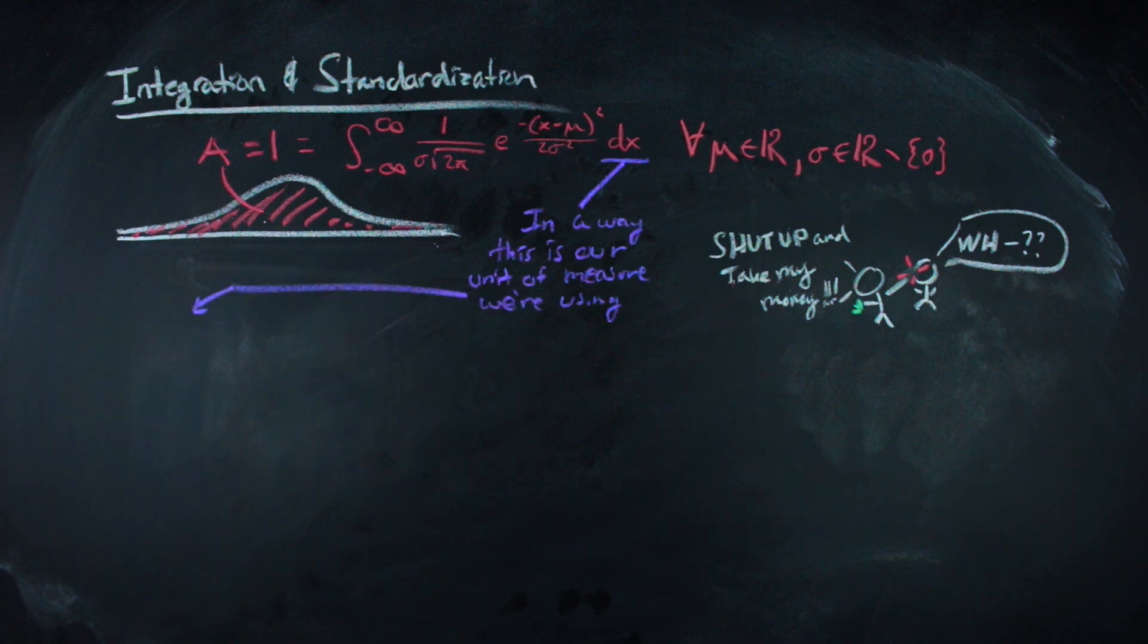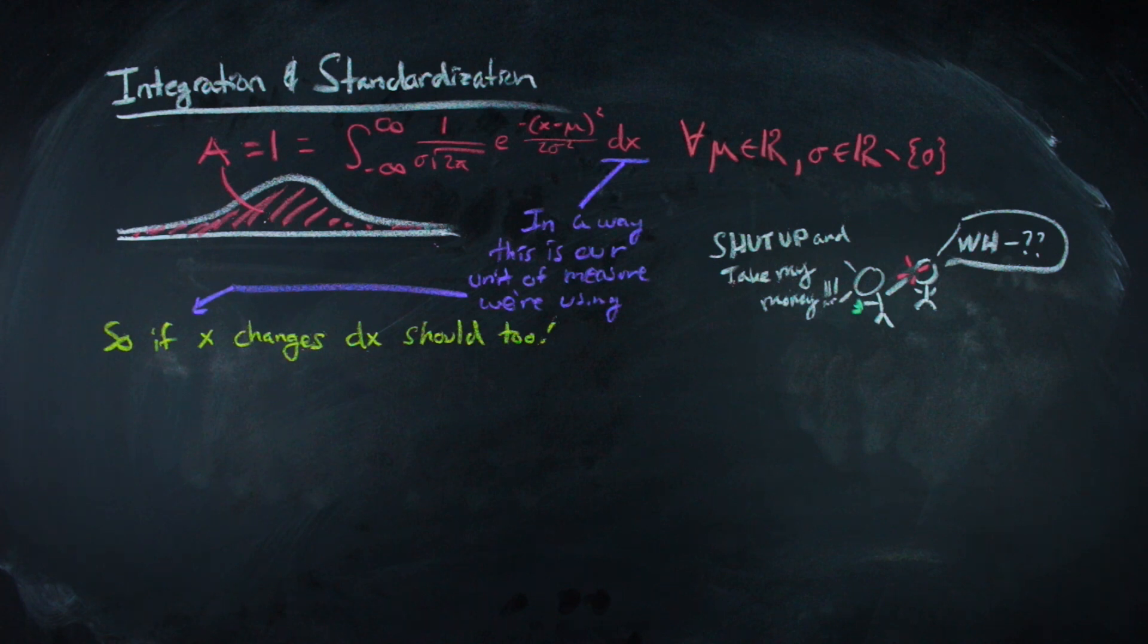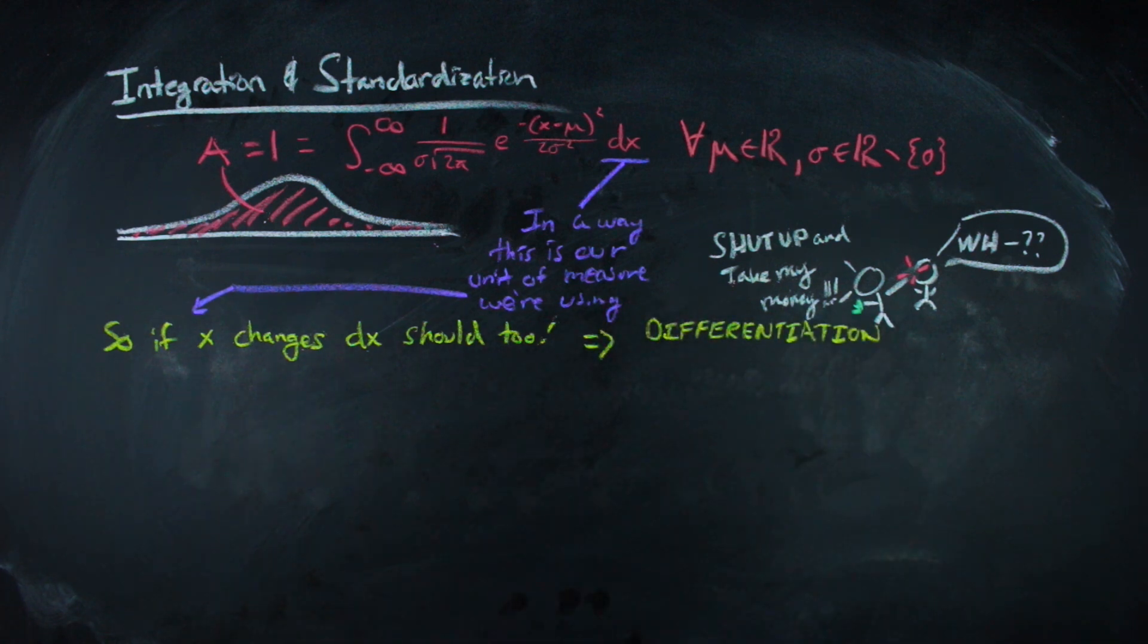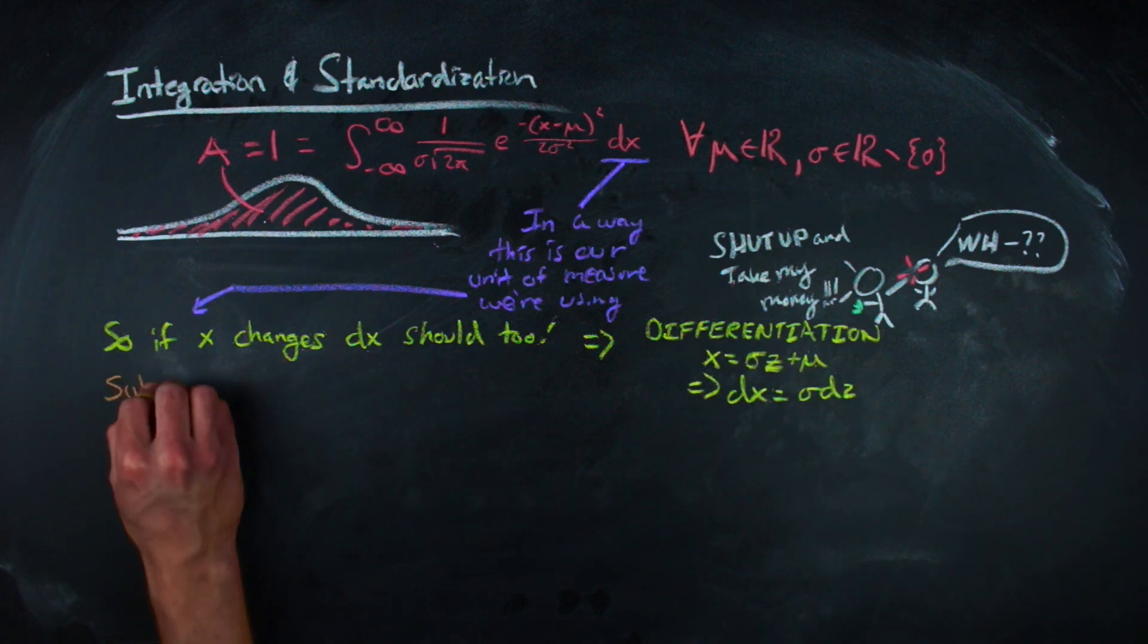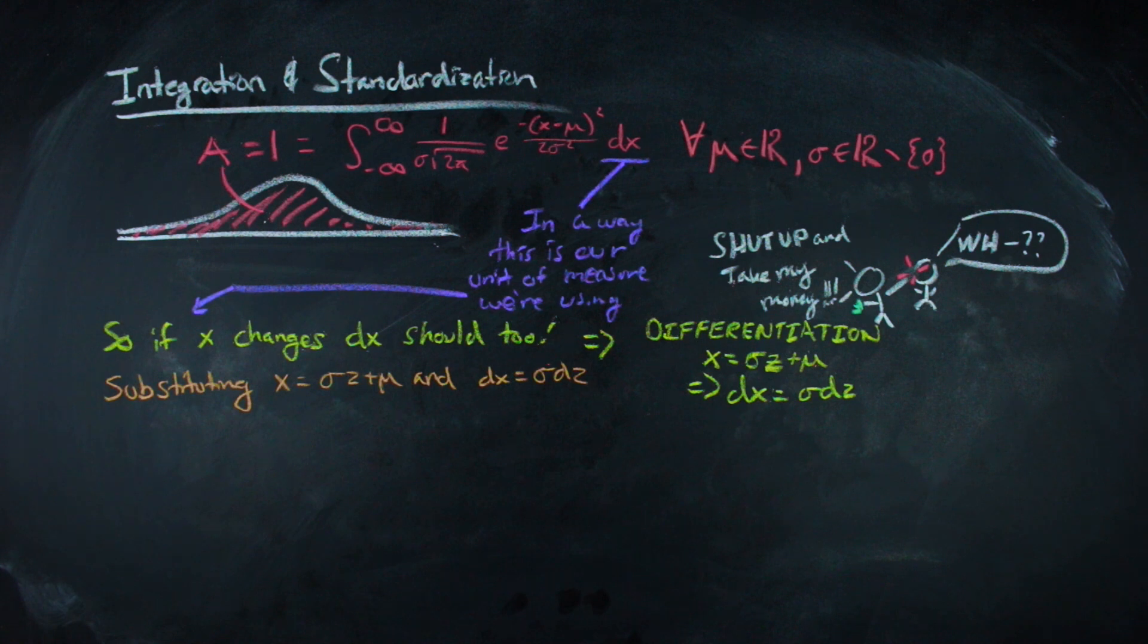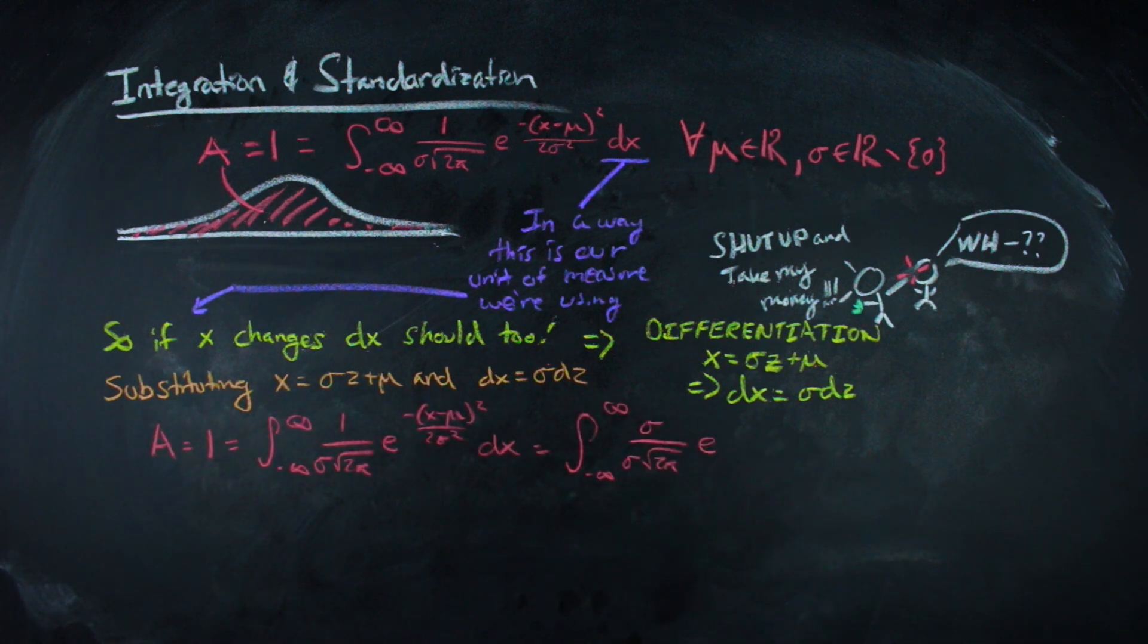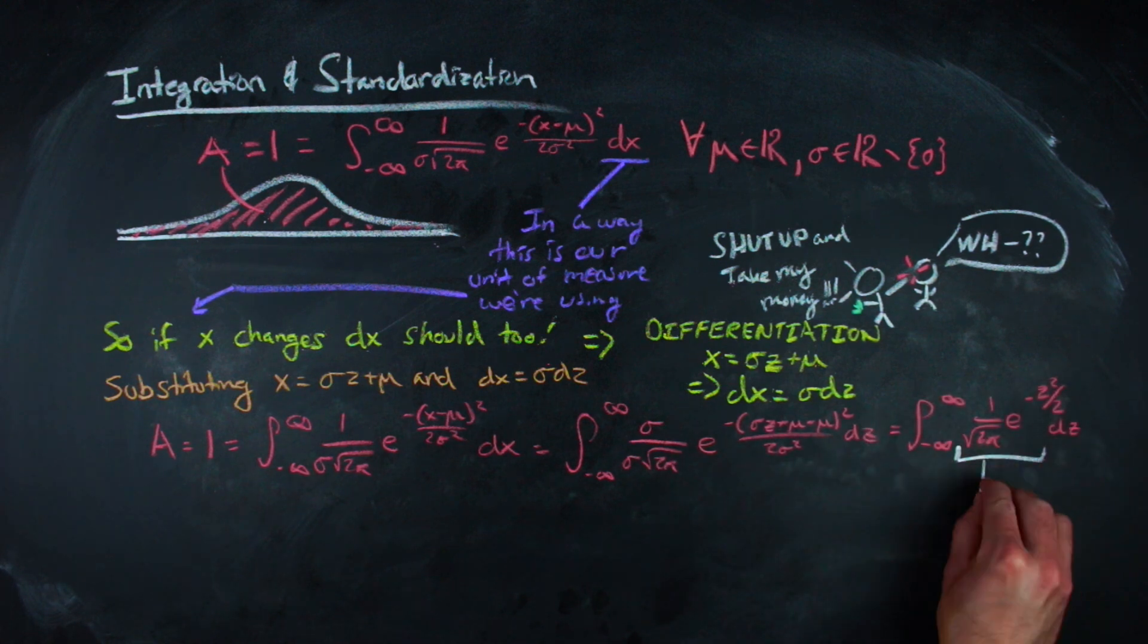When we want to figure out how differentials compare when switching variables, we differentiate both sides to find that a differential in x is sigma times the differential in z. Thus when we substitute the value of dx into the integral of our translated and scaled normal curve, we get an integral with an integrand identical to the standard normal distribution. And this is what finishes the standardization of the distribution.